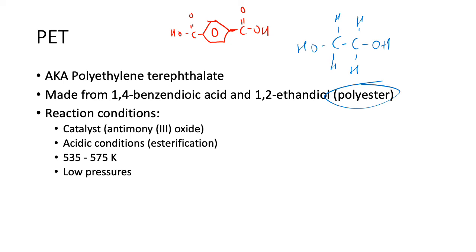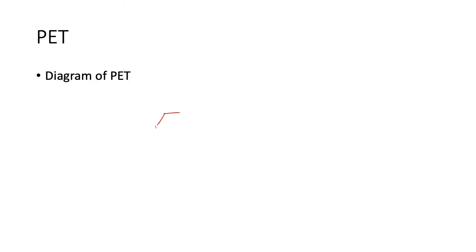Let's draw a diagram of PET. Here's your benzene ring, connected via a carbon and an ester group to the diol — the double alcohol — and then there's another benzene ring continuing the structure.